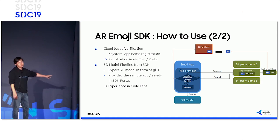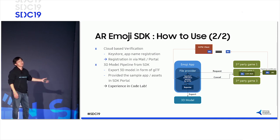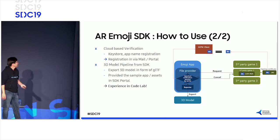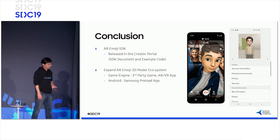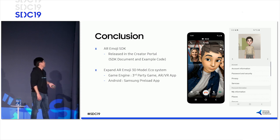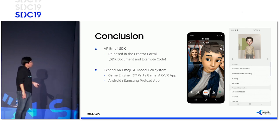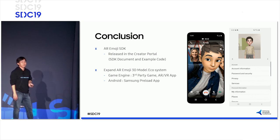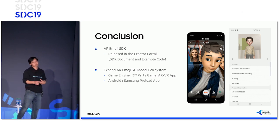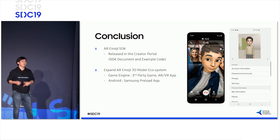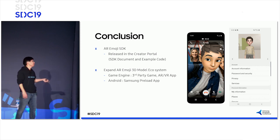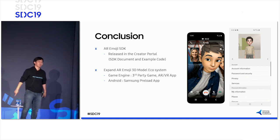We're also running a code lab here, so if you have questions or want to experience the process, please come to the code lab. In conclusion, we are establishing the AI Emoji SDK and it will be released in the software update for most Galaxy devices. The full documentation, sample apps, and other software will be updated on the SDK portal. You can also find it at the code lab and the SDK portal session.